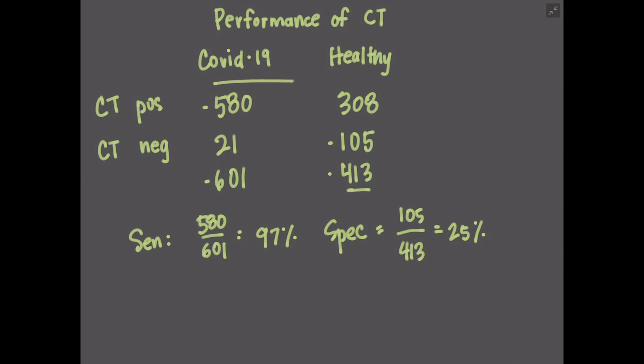For predictive value, those numbers go across this way on this table. So to calculate the positive predictive value, which is the number of patients who actually had the disease that we thought had the disease based on the test we're looking at. So in other words, we want to add up the total number of positives, which comes out to 888. And how many patients actually had the disease of those 888 patients? So we're only looking at this number here, 580. So 580 divided by 888, this is the positive predictive value, and that comes out to 65%.